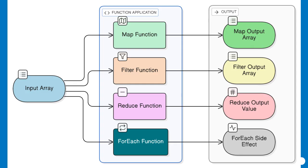The original array remains untouched, much like a painter preserving the base canvas while creating variations on a theme. For example, if you have an array of prices in dollars and want to convert them to euros, map lets you multiply each price by the exchange rate, returning a new array of euro values. This is akin to an assembly line where each item passes through a station and emerges transformed but in the same position as before.